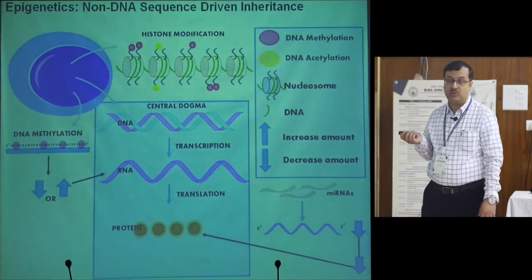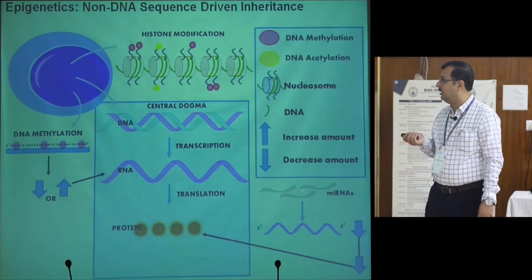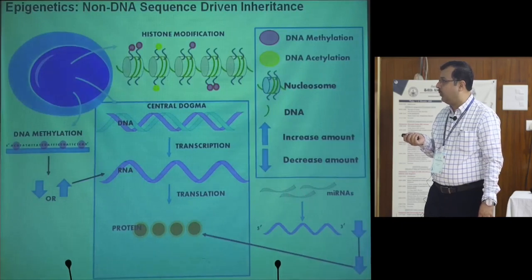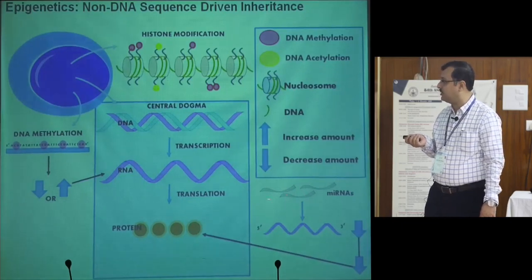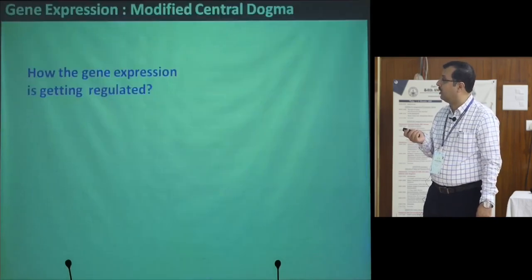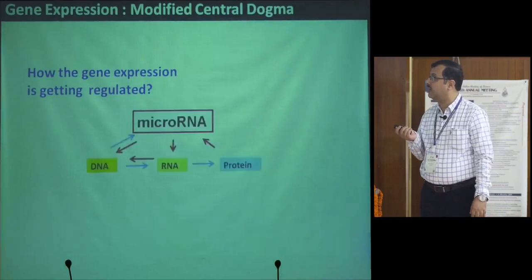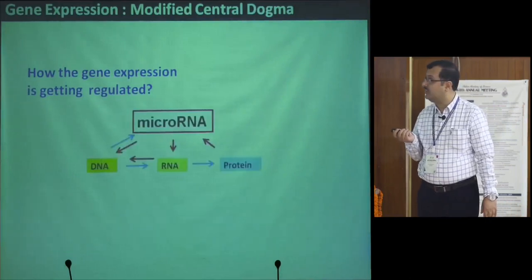One small RNA I am going to talk about is called microRNA, which can regulate gene expression by targeting some mRNAs, binding to them, and regulating their protein expression, or also inducing the degradation of those mRNAs. So how gene expression is regulated — the central dogma has now changed.